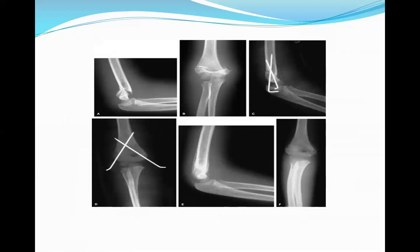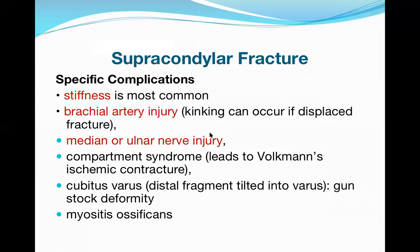X-rays showing percutaneous pinning: the lateral and AP views clearly show the fracture line and the K-wires placed across the fracture site. Regarding complications, stiffness of the elbow is the most common — that is why physiotherapy and active exercises play a big role in reducing the chances of stiffness.